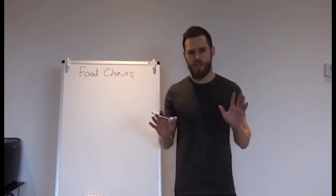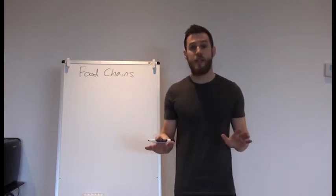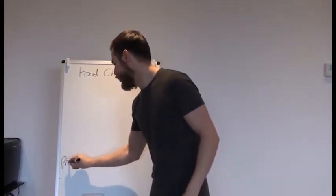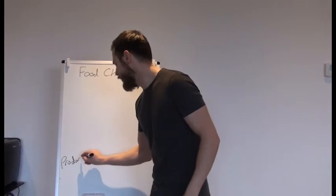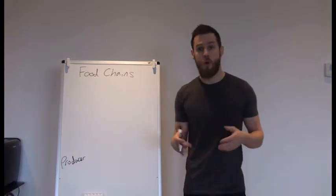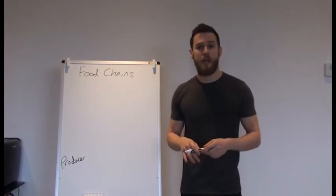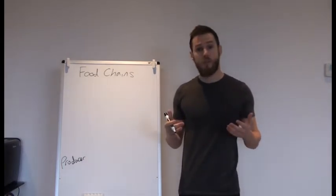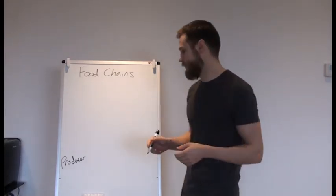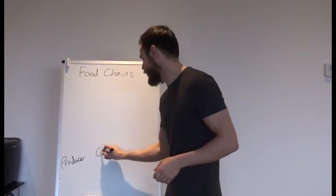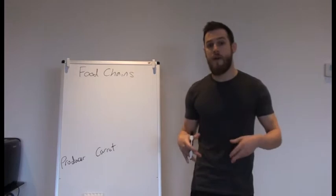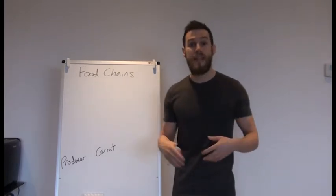A food chain always starts with an organism known as a producer. A producer is any organism which can make its own food using photosynthesis or some other method. In our particular example we're going to look at plants, and we're going to have the example of a carrot plant. So a carrot plant is a producer because it takes energy from sunlight to make its own food.